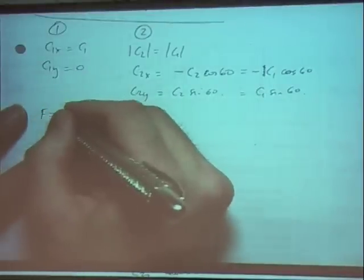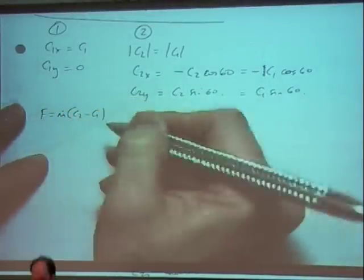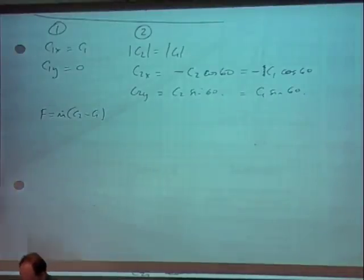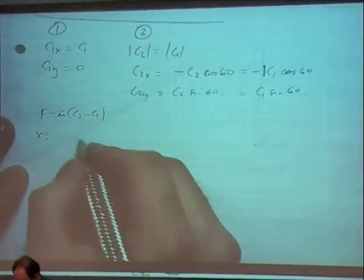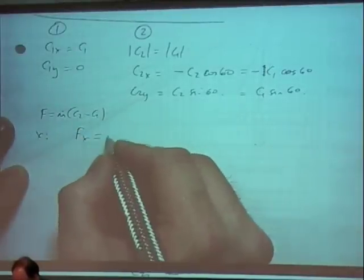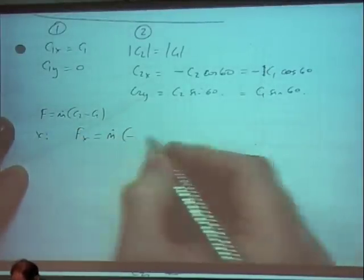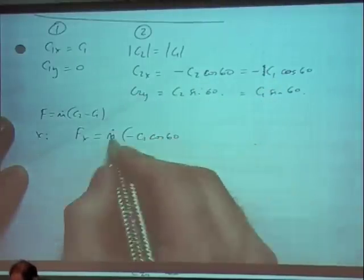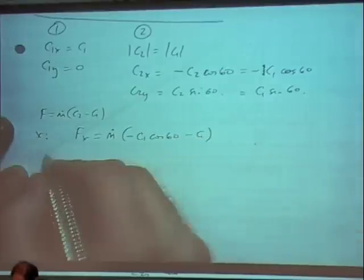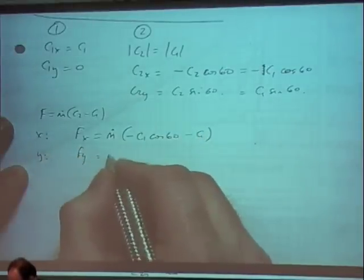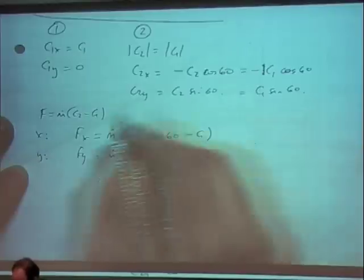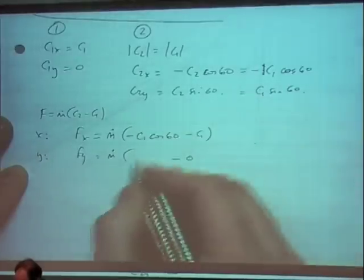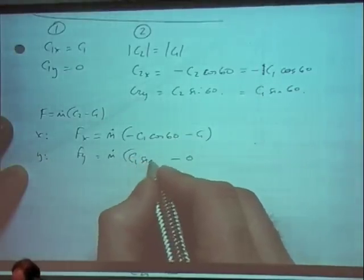We know f equals m dot times c2 minus c1. So in the x direction, the force on the fluid in the x direction is m dot times c2, which is minus c1 cosine 60 minus c1. In the y direction, fy, force on the fluid in the y direction, we've got nothing for point one, and for the y direction in two, we've got c1 sine of 60.